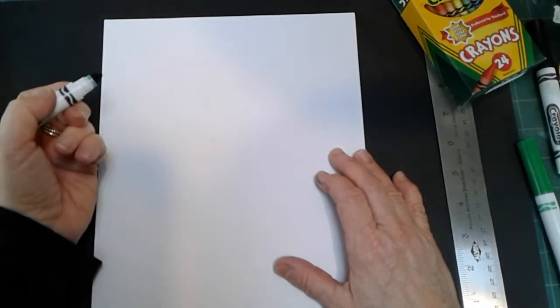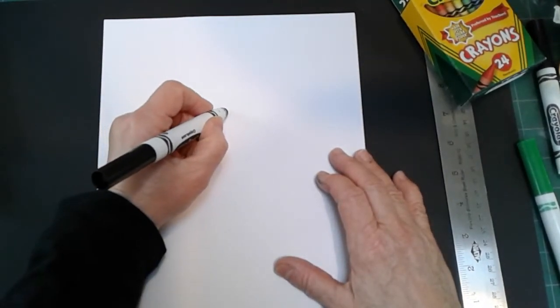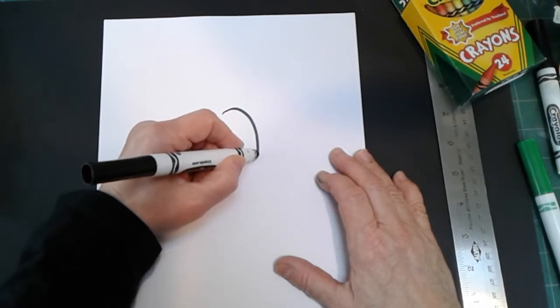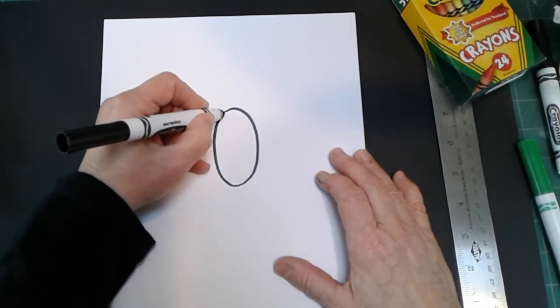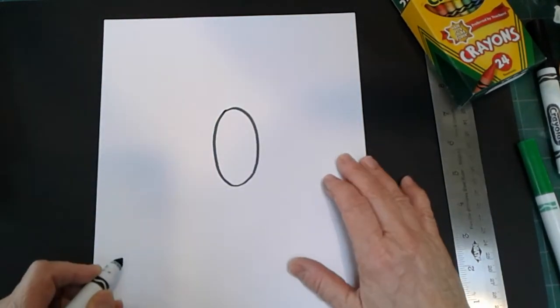The first thing we're going to do is make an oval in the middle of our page, a long oval for the mouse's body.